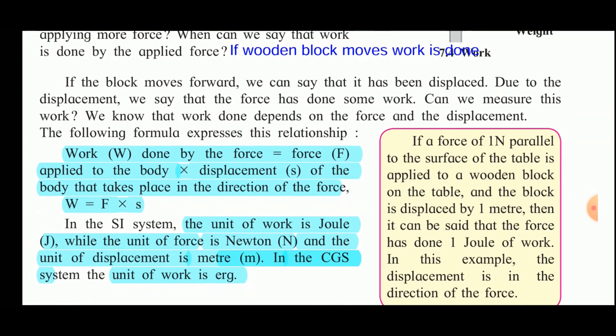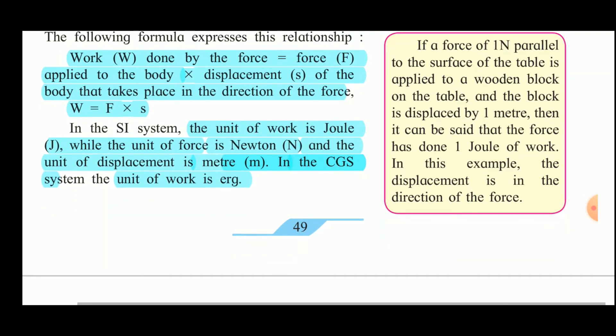Can we measure this work? We know that work done depends on the force and the displacement. Work is given by: work equals the force applied to the body multiplied by the displacement of the body in the direction of the force — so Work = Force × Displacement. In the SI system, the unit of work is the Joule, the unit of force is the Newton, and the unit of displacement is the meter. In the CGS system, the unit of work is the erg.